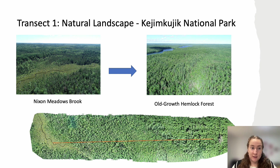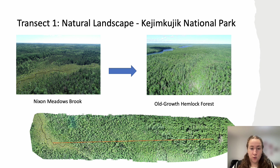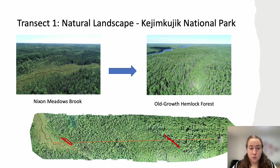Our first site, or transect one, is in the natural landscape and is located in Kejimkujik National Park. It runs from Nixon Meadows Brook — the first quadrat is actually in the brook itself — through a young spruce-dominated forest through to the old-growth hemlock forest. Visually we expect to see edges at the transition from the wetland, as well as potentially between the two forest types, where it transitions from the younger spruce-dominated forest into the more mature hemlock forest.